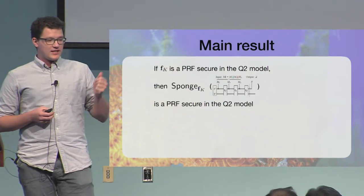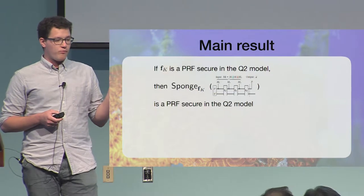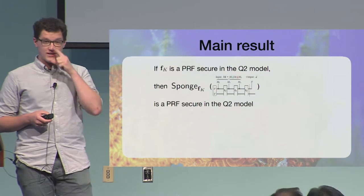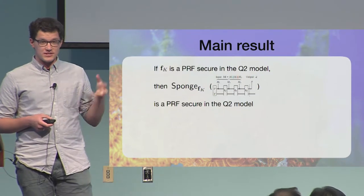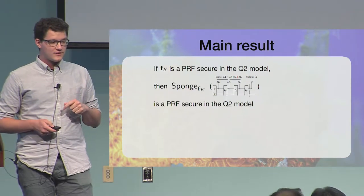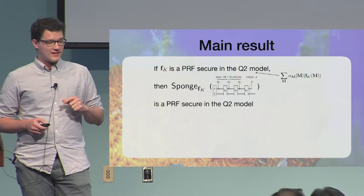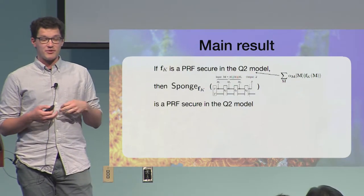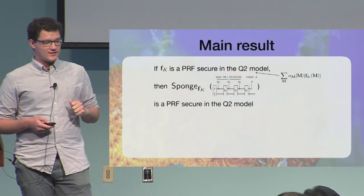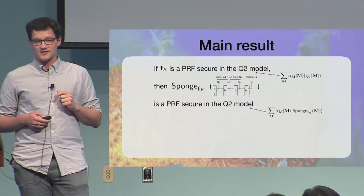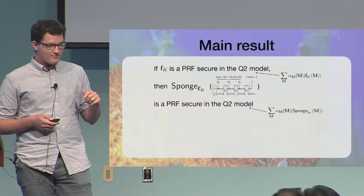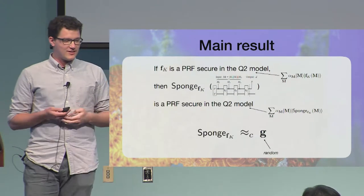So this is how the attack works, and this is our result. So, if FK is a random function secure in the Q2 model, then the sponge construction, similar to the one you've seen before, that I will give more details on it later, so this is the superposition that the adversary can prepare against the function. Okay? Then the resulting construction is secure in the Q2 model as well. And this is kind of her interaction with the whole construction. Okay? So this is a short version of the result.